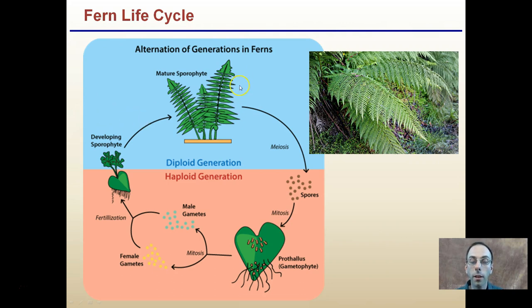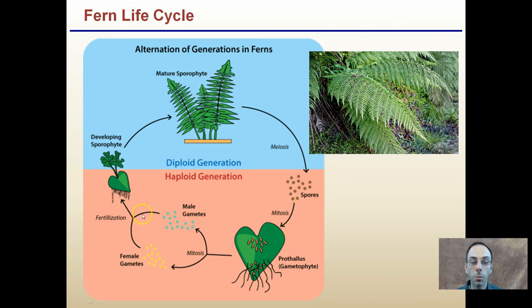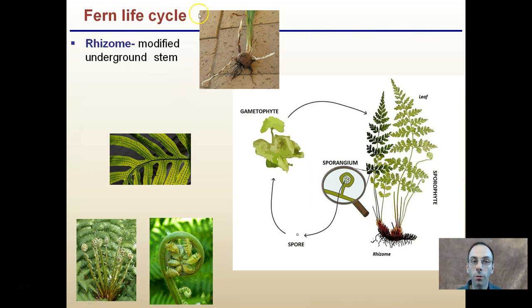Now the alternation of generations — as I mentioned, you're most familiar with the large sporophyte. The haploid generation producing the gametes is the gametophyte, which looks very different. Those spores come together as sori on the underside of the fronds, falling to the ground and producing the gametophytes that produce both male and female gametes, which fertilize to develop the diploid organism.